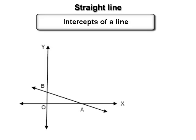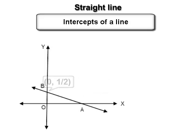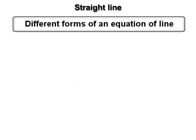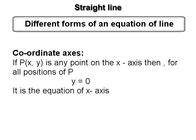Note: if the intercept made by a line on the x-axis is 4, the point (4, 0) lies on the line. If the point (0, 1/2) lies on the line, then 1/2 is the y-intercept. We now discuss different forms of an equation of a line. First, the coordinate axes: if P(x, y) is any point on the x-axis, then for all positions of P, y = 0. Therefore y = 0 is the equation of the x-axis.